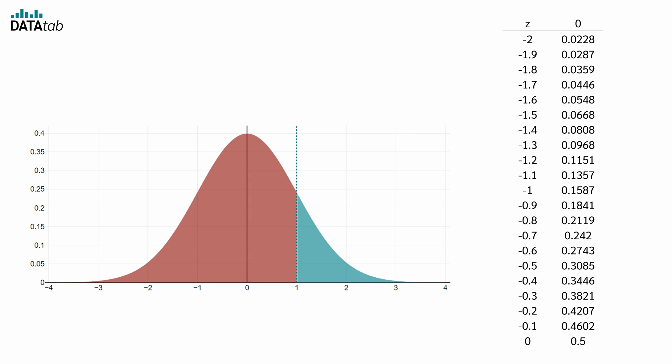Since the normal distribution is symmetrical, we can read off the probabilities for positive z-values. For a z-value of 1, we refer to minus 1 in the table, which inversely indicates the percentage of values lying above the z-value. Thus, with a z-value of 1, 84.19% of values are below and 15.81% are above.